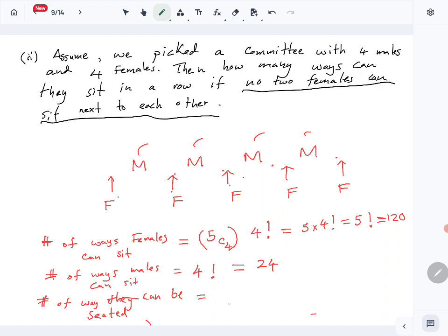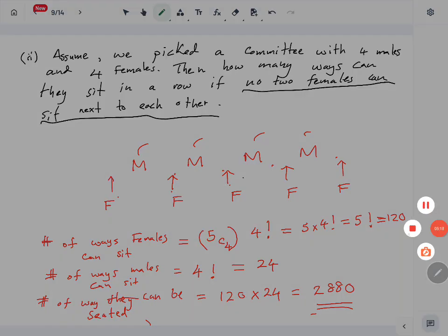Then the number of ways they can be seated such that no two females sit together is 120 times 24, which equals 2880.